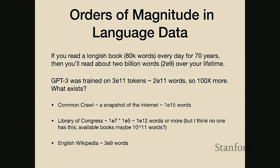One way to think about this is how much language do we consume as a person for comparison. If you were a very voracious reader, reading a long book every day for 70 years, you'd end up reading something like 2 billion words over your lifetime. For comparison, a canonical large language model, GPT-3, was trained on the order of 200 billion words - about 100 times more language data than you might see in a lifetime trying really hard to attend to written text.